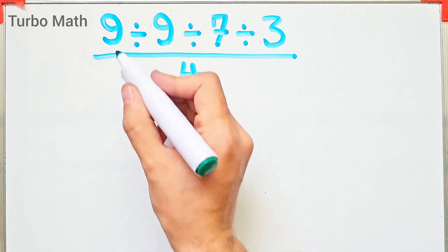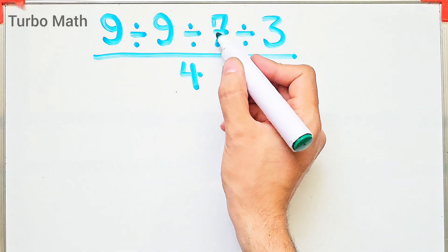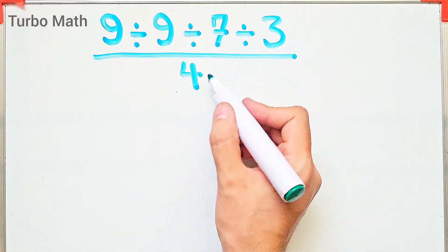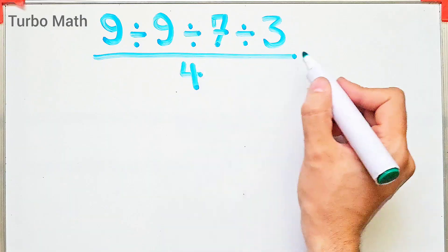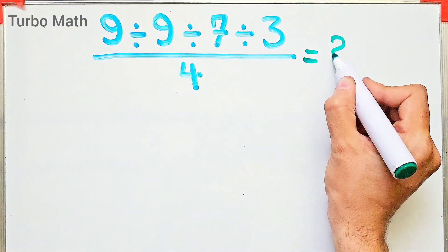9 divided by 9, then divided by 7, then divided by 3, then over 4. What is the answer of this question? Can you solve it?